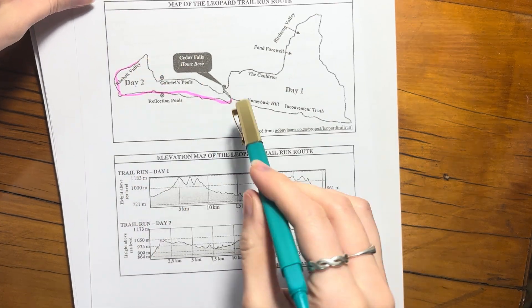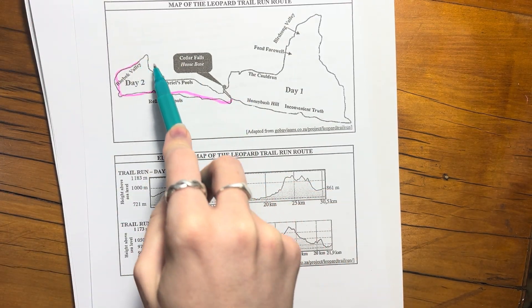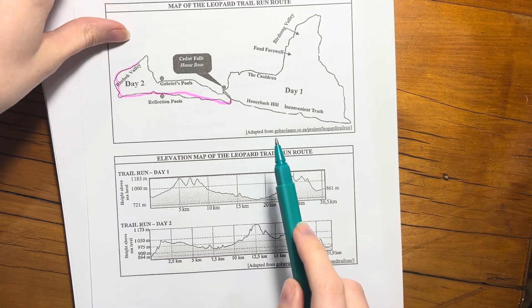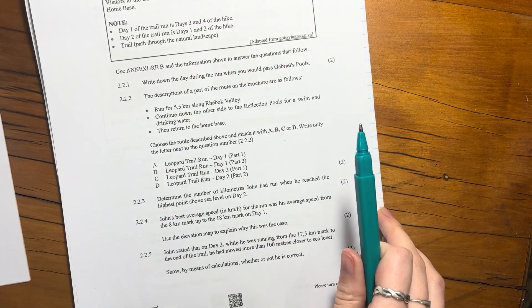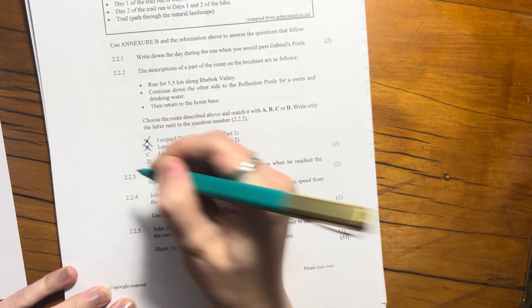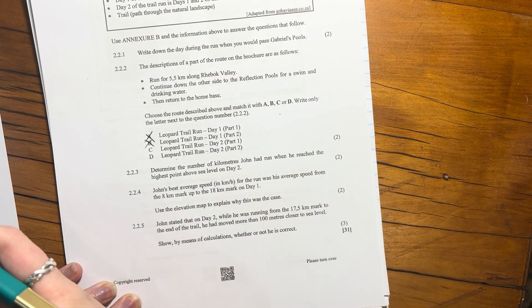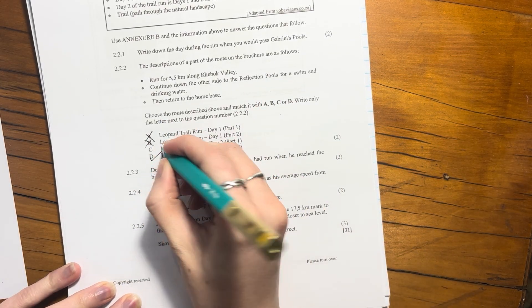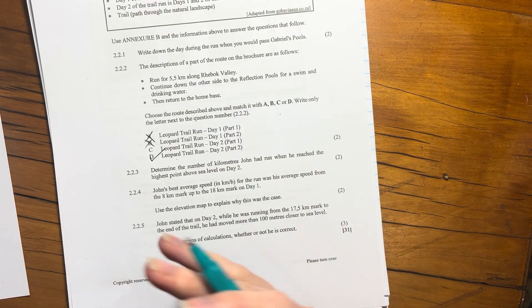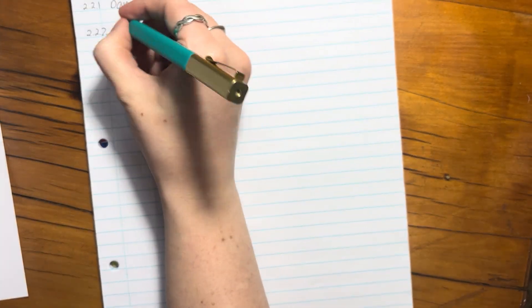It's basically day two of the run, and it's the second half. You can see that the first half you go to Gabriel's Pool, second half you do Ribbok Valley. We really said day two, so we know it's not the first two options. It's day two, either part one or part two. Just from looking at the map we can see that it's part two, so our answer is going to be D.